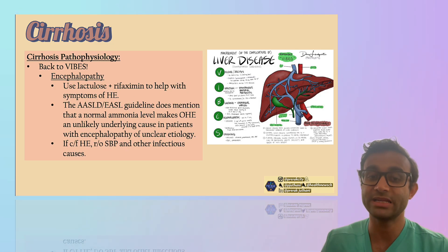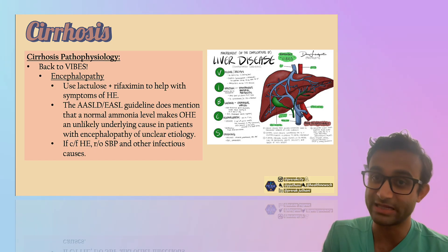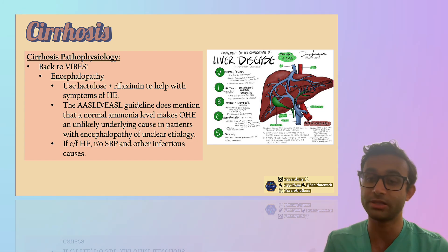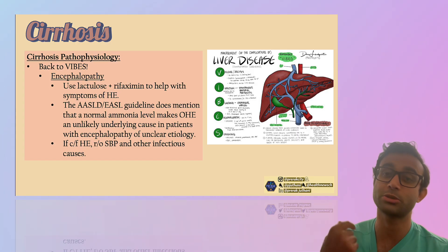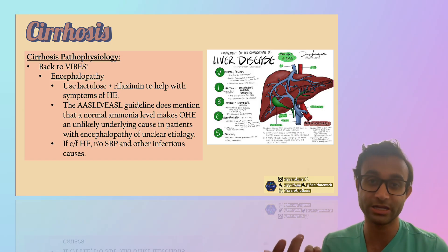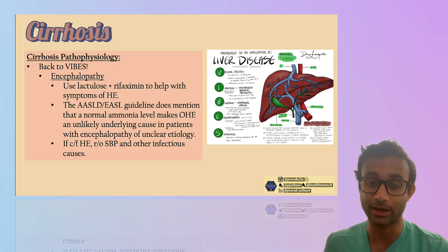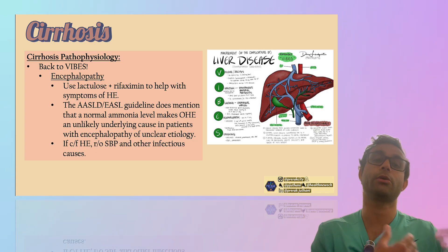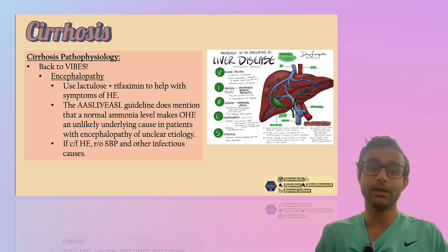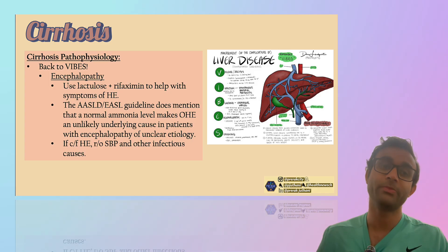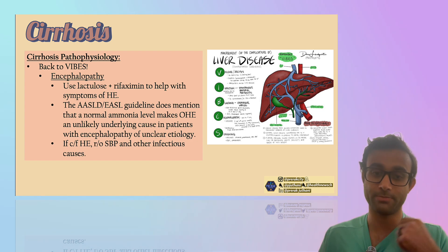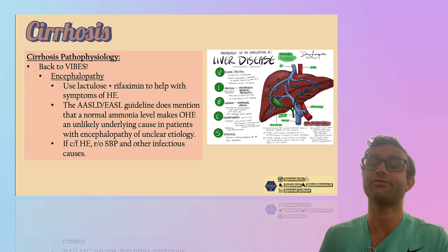The E in VIBES stands for encephalopathy. Patients with cirrhosis cannot metabolize ammonia well, increasing the likelihood of hepatic encephalopathy as ammonia levels build up. You can use lactulose and rifaximin, titrating to about 3 to 4 bowel movements per day to decrease the risk. If you're concerned about hepatic encephalopathy, also rule out spontaneous bacterial peritonitis as a trigger. You can check an ammonia level — while some say not to, a normal ammonia level makes hepatic encephalopathy less likely to be the underlying cause of a patient's altered mental status.